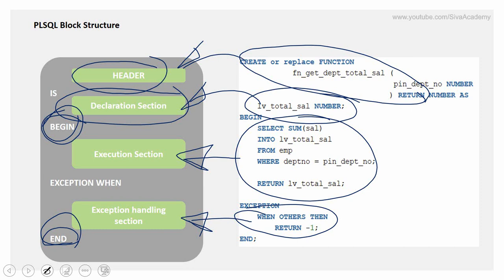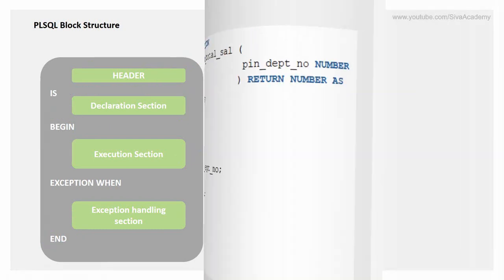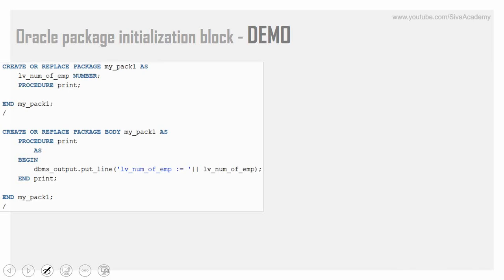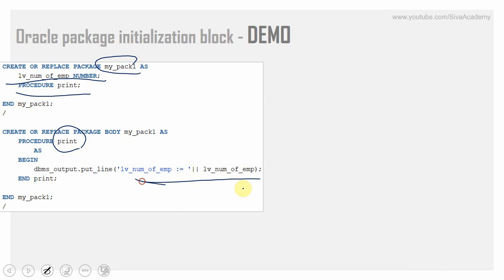Before we see the initialization block, let us look at a simple package so that our understanding of the initialization block will be much better. Here is a simple PL/SQL package I have created. I'm creating a package called MY_PACK_ONE, which has only one variable declared and one procedure called PRINT. Within this PRINT procedure, I'm just printing the value of the variable. When we call PRINT by default, it will print NULL.